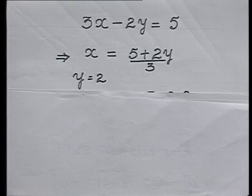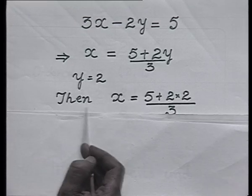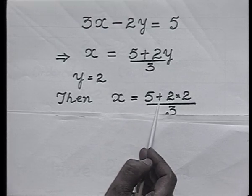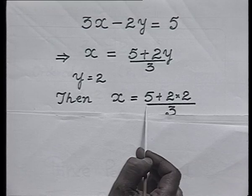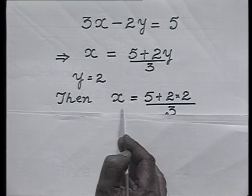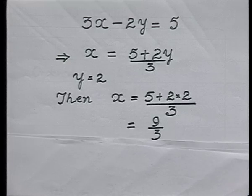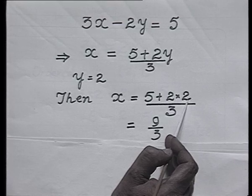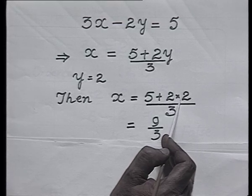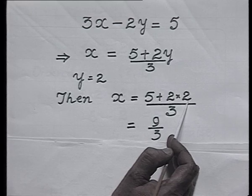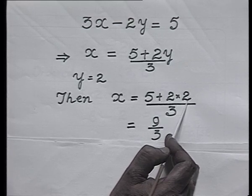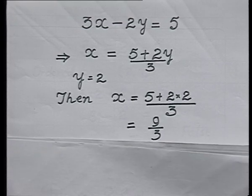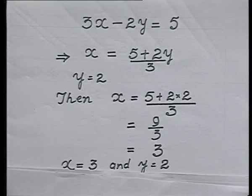We put the value of y as 2, so I get x equals 5 plus 2 times 2, all divided by 3. Remember the BODMAS rule: whenever addition and multiplication occur simultaneously, we perform multiplication first. So 2 cross 2 is 4, added to 5 gives 9, so that is 9 upon 3. The value of x comes as 3.